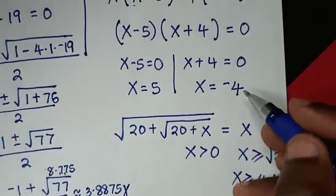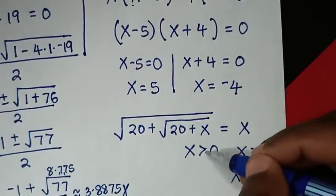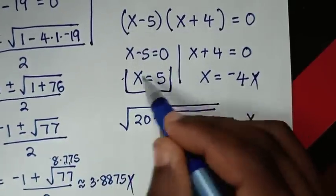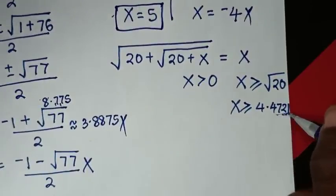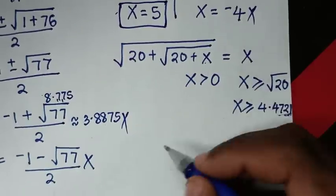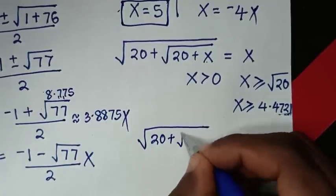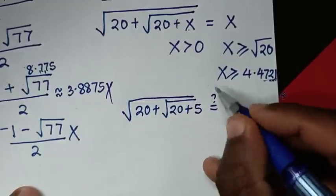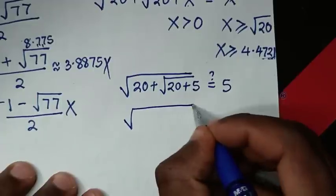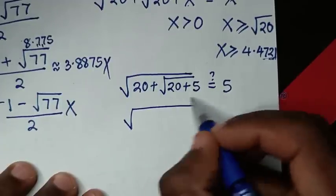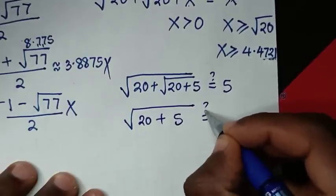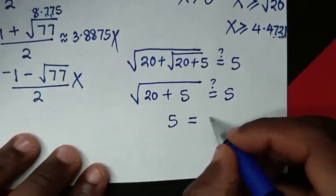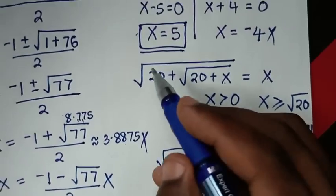From the second solution: x equals negative 4 is less than 0 — rejected. But x equals 5 is greater than 0 and greater than 4.4721, so this is the valid solution. Verifying: square root of 20 plus square root of 20 plus 5 equals square root of 20 plus square root of 25 equals square root of 20 plus 5 equals square root of 25 equals 5. Left side equals right side, confirming x equals 5.